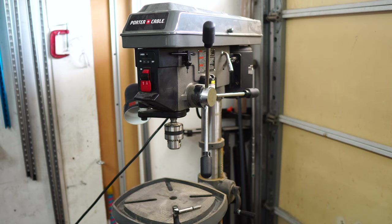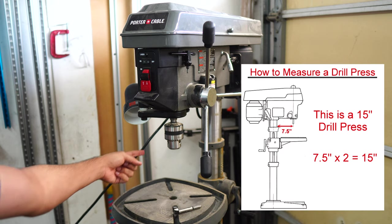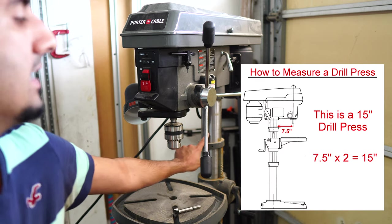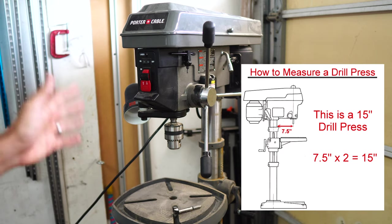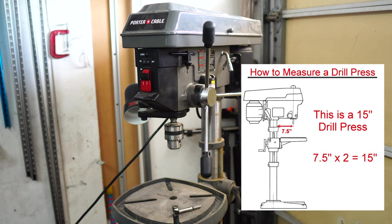Additionally, it is called a 15-inch press because it is two times the length between the center of this and the column. So when you hear the model being called a 15-inch press, it means it's a 7.5-inch capability between the two.